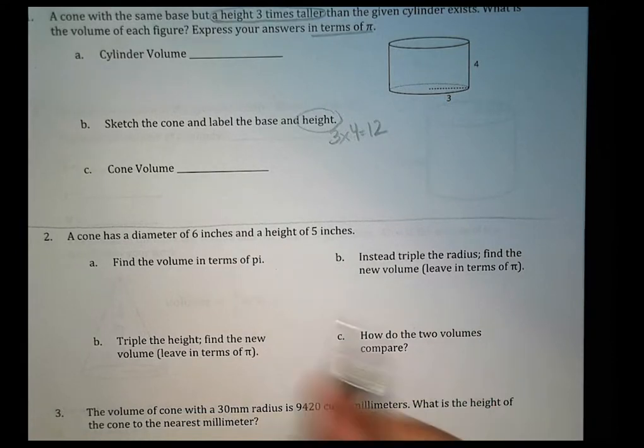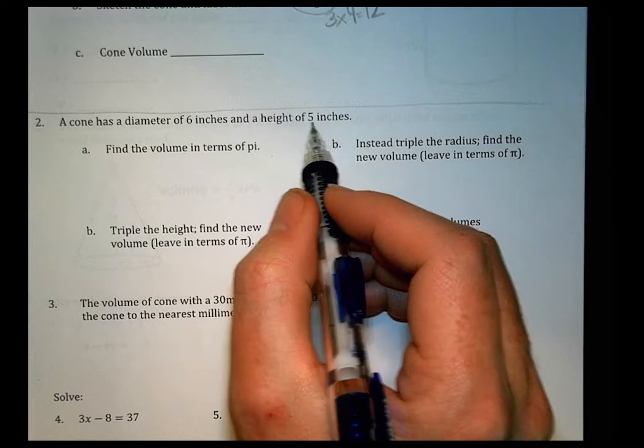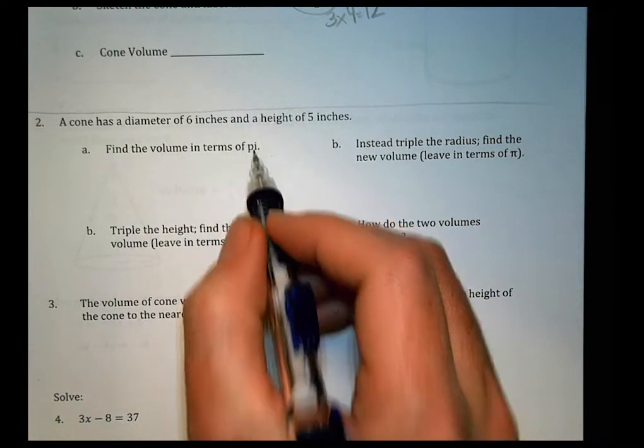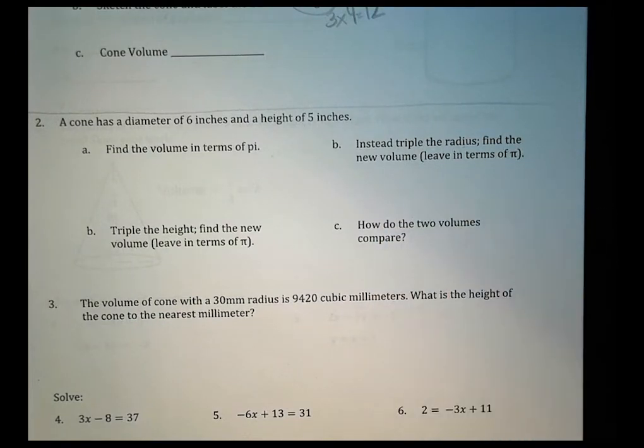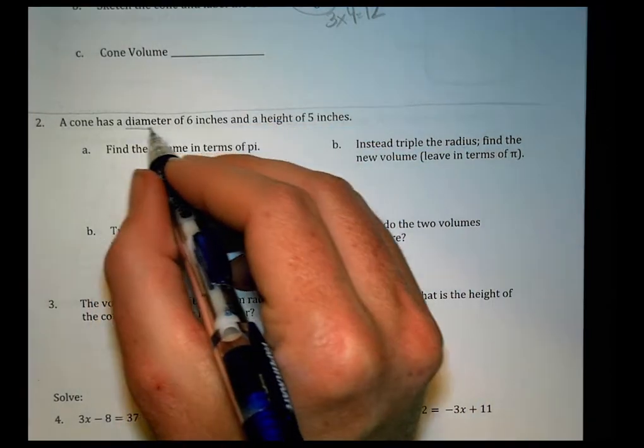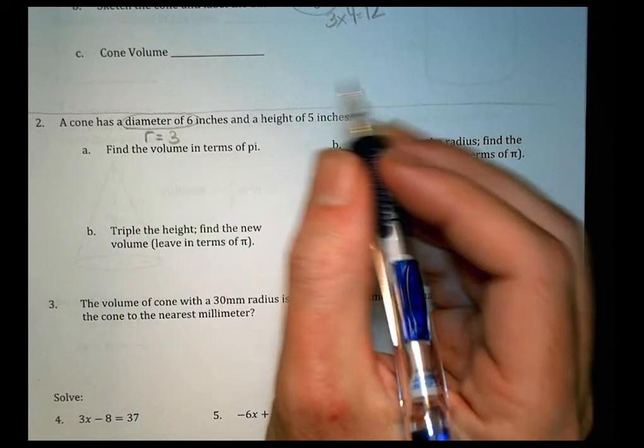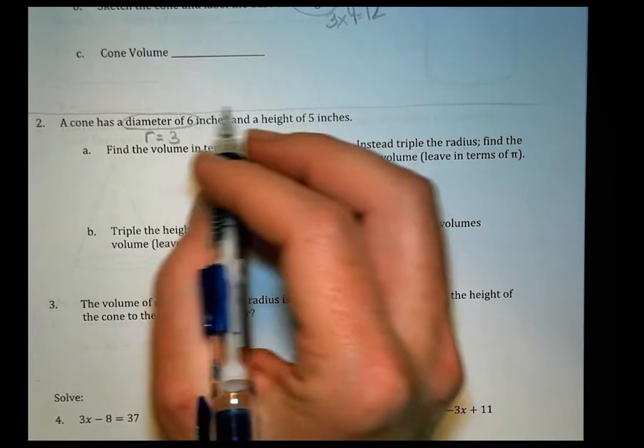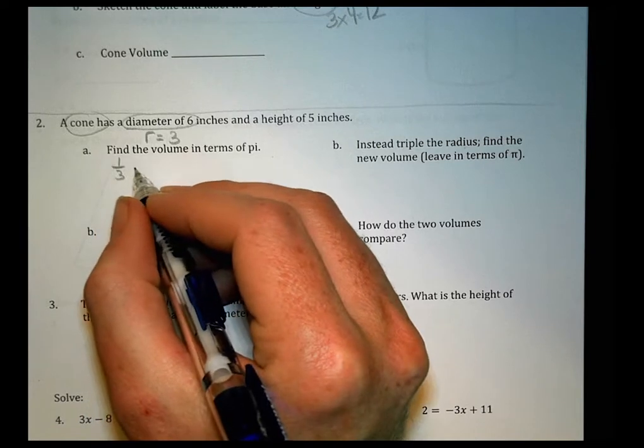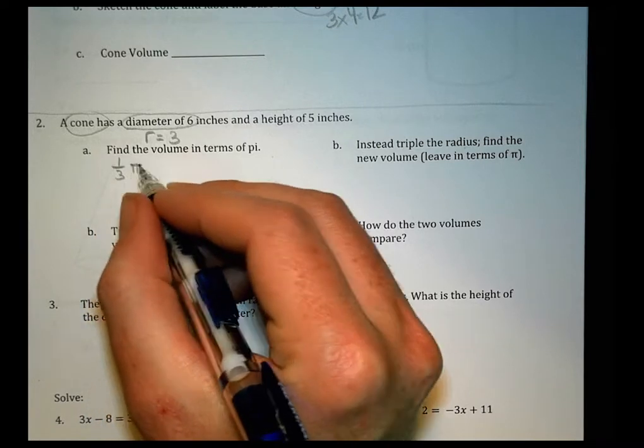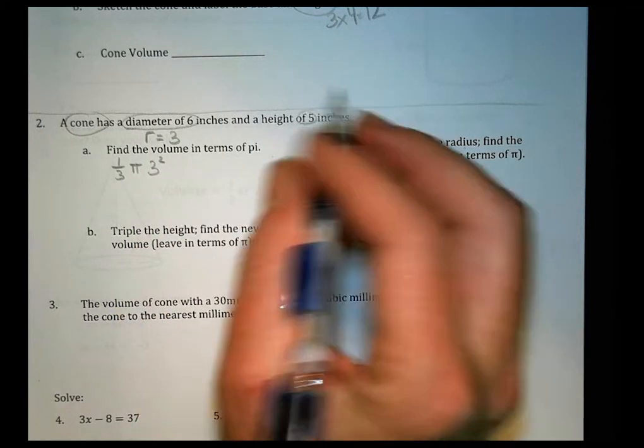Number two. A cone has a diameter of 6 inches and a height of 5 inches. Find the volume in terms of pi. Triple the height and find the new volume. Triple the radius, find the new volume, and then compare. Alright. Well, diameter is not super helpful for us because we tend to use the radius, which is half of that, for our equations. So we would say that the volume of the cone is going to be 1/3 of pi times the radius, which is 3, squared times the height, which is 5.